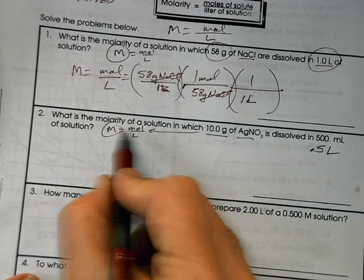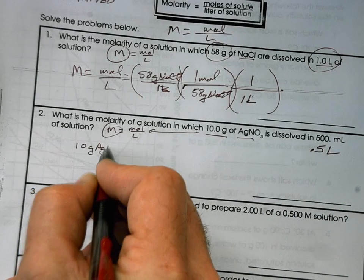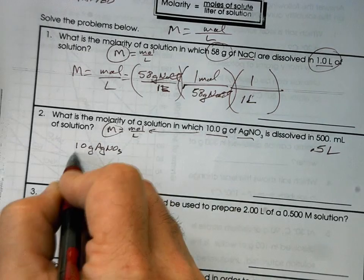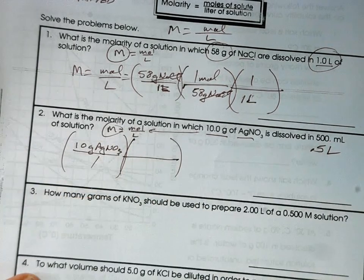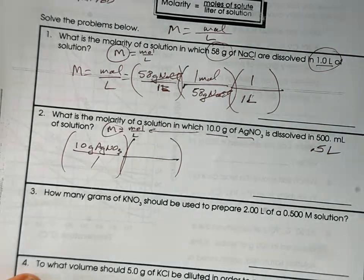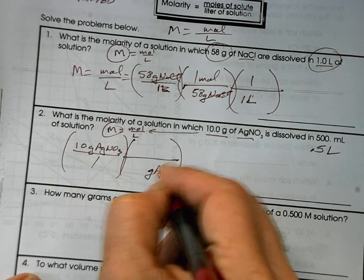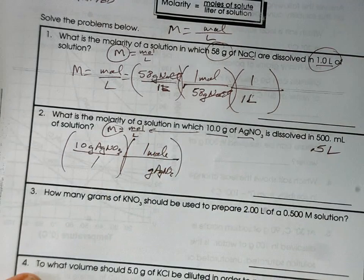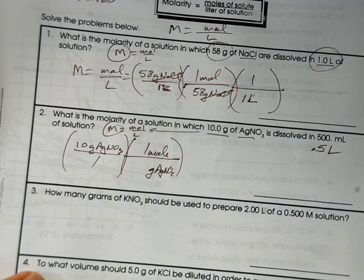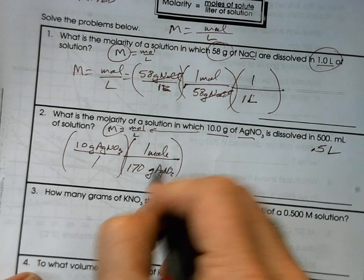So with this one, we're just going to get it set up. We're going to start with our given 10 grams of silver nitrate, AgNO3. I'm going to put that over 1. What is the molar mass for silver nitrate? I'm assuming you all had to figure that out. What is it? How many grams of silver nitrate is one mole of silver nitrate? I'm hearing 170 or 175. 170 grams of AgNO3.